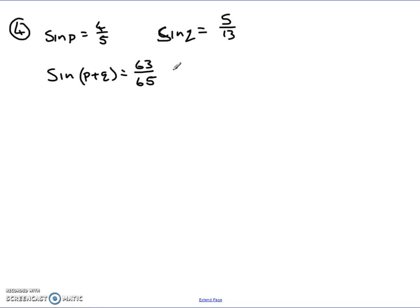is that sine of P plus Q equals 63 over 65. That's the ultimate goal for this question. I want to show that. Well, I've got two angles, P and Q.